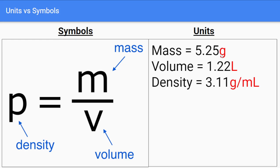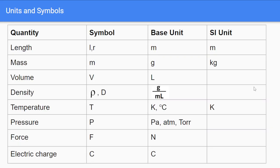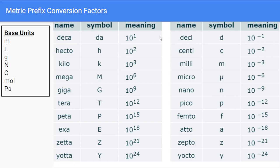For example, mass would be grams, volume would be liters, density is grams per milliliter. There are a lot of different types of measurement, and they each have their own symbols and a variety of different units. In the metric system, we have the base unit and the prefixed unit, and we use this chart to help show the relationship between the base and the prefixed unit.